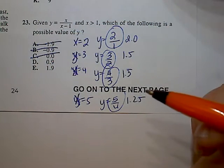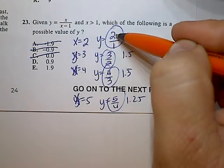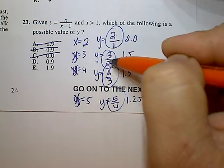I eliminate any choice that does not provide me with a positive output. When the number on top, the numerator, is greater than the denominator, as I have,